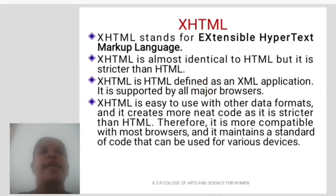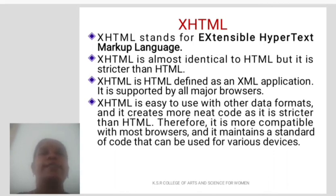XHTML stands for Extensible Hypertext Markup Language. XHTML is almost identical to HTML but it is stricter than HTML. XHTML is HTML defined as an XML application. It is supported by all the major browsers. XHTML is easy to use with other data formats and it creates neater code as it is stricter than HTML.